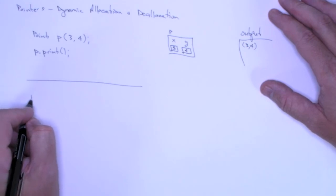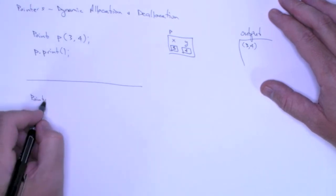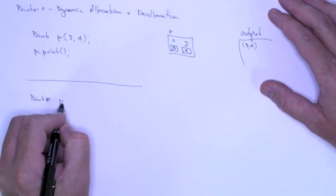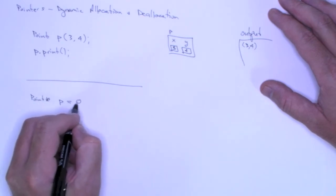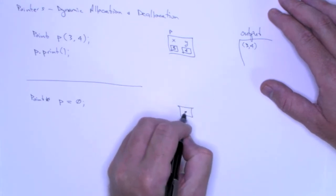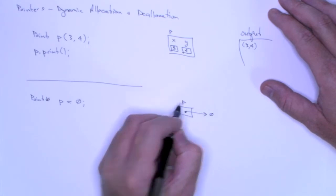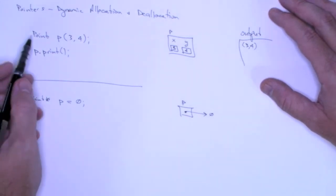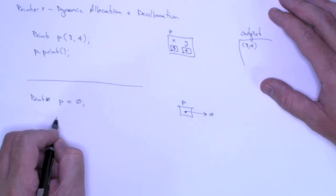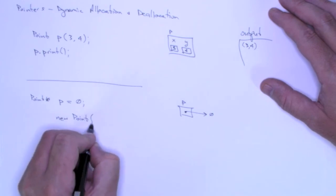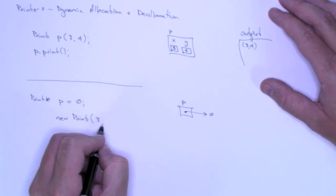So how would we do this using pointers? So first of all, to declare a pointer to a point object, I use the type and then I add the asterisk. I'm just going to use p again as a pointer. And I'm going to set it to an initial value of null. So here in memory, I've got my pointer that points to null and it is named p. So to dynamically allocate a point object, I'm again going to use the new operator. And I follow it with the type and then the parameters for the constructor if there are any.